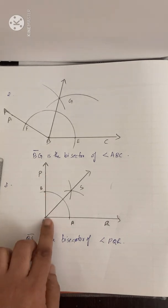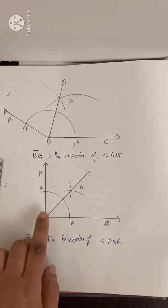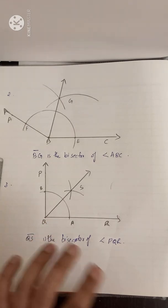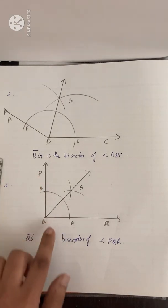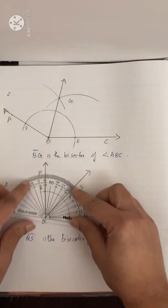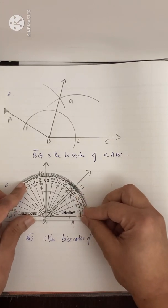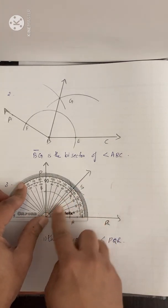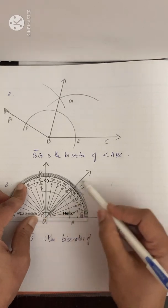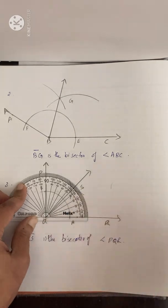In the next question I will show how to construct using ruler and compass. Here they did not ask us to use ruler and compass, so I constructed with the protractor. The bisector of 90 degrees is 45 degrees. Let us check — it is exactly going through 45 degrees. You can see that arm QS is passing through 45 degrees.